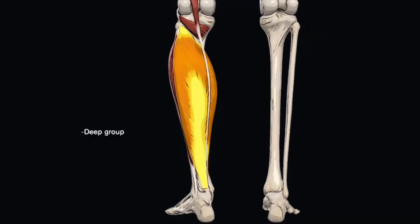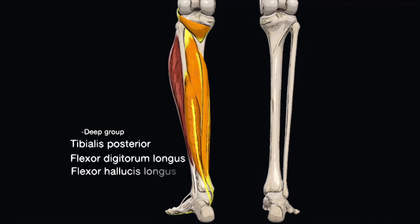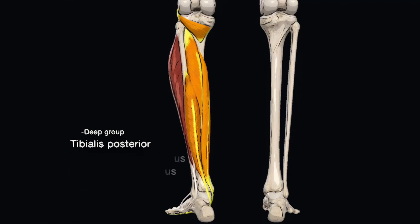Finally, the muscles of the deep group of the posterior compartment will be reviewed. The deep group consists of the tibialis posterior, flexor digitorum longus, flexor hallucis longus, and popliteus. They plantarflex the foot at the ankle joint, flex the toes at the metatarsophalangeal and interphalangeal joints, and invert the foot at the subtalar and transverse tarsal joints. However, the popliteus muscle, which also belongs to this group, only acts to unlock the extended knee during standing.